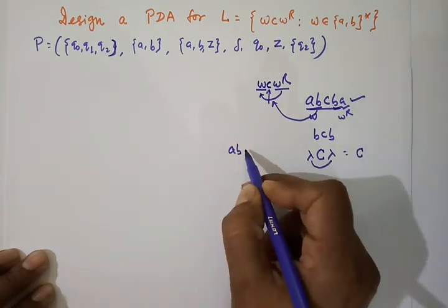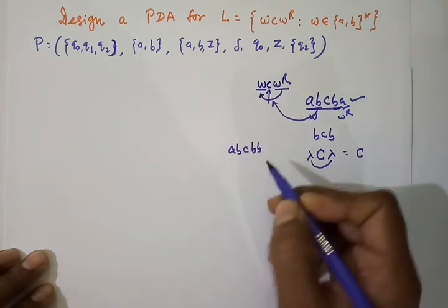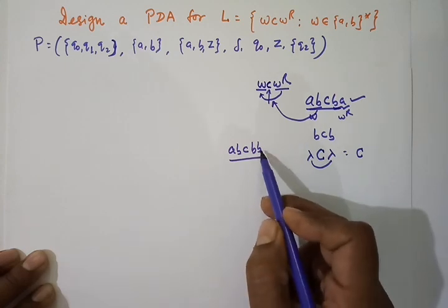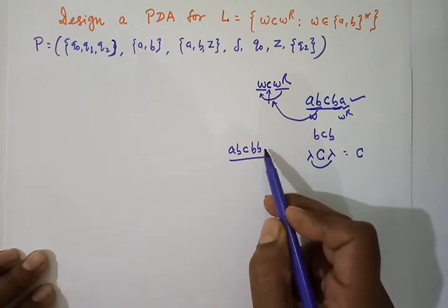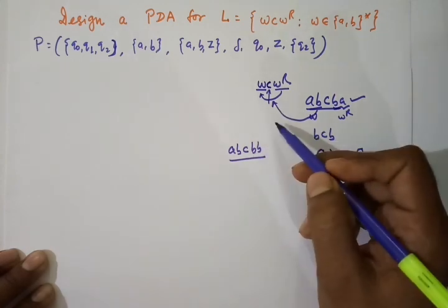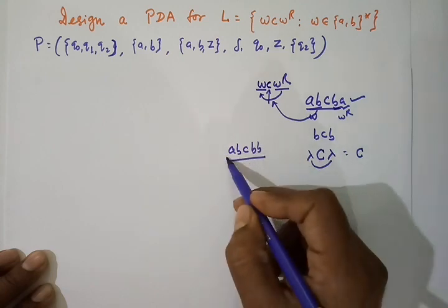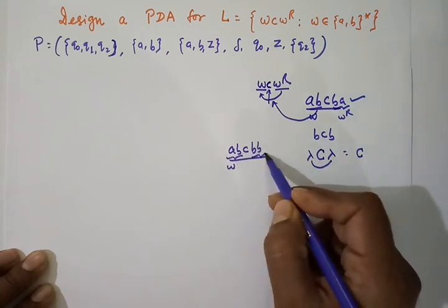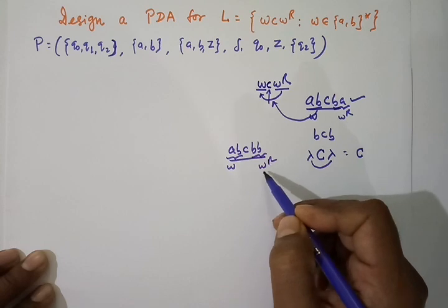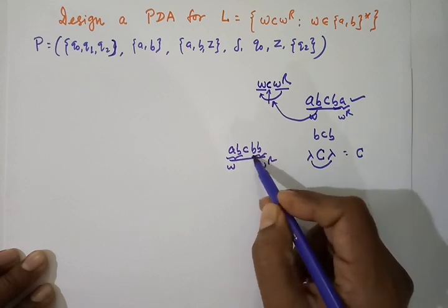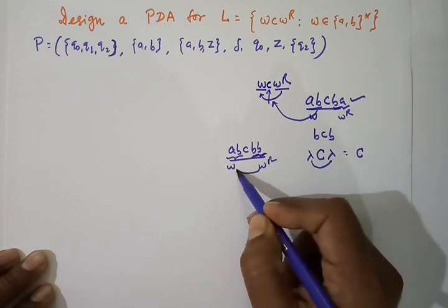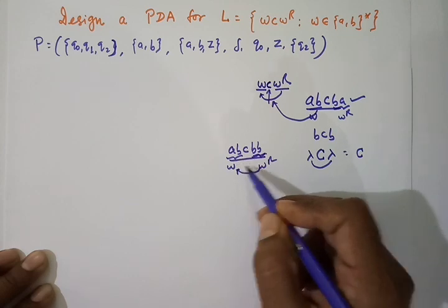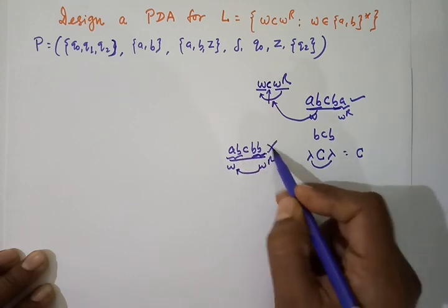However, the string A, B, C, B, B is not in the form WCW^R, because in this case AB is our W and BB is our supposed W^R. But BB is not the reverse of AB. So this string should not be accepted.